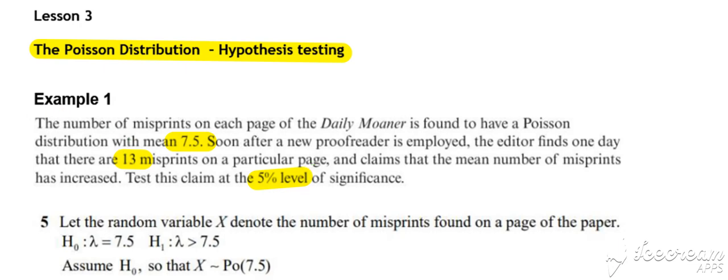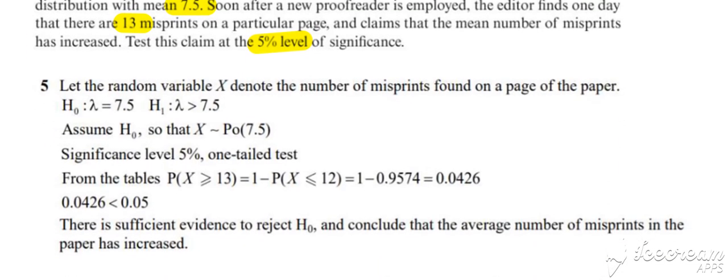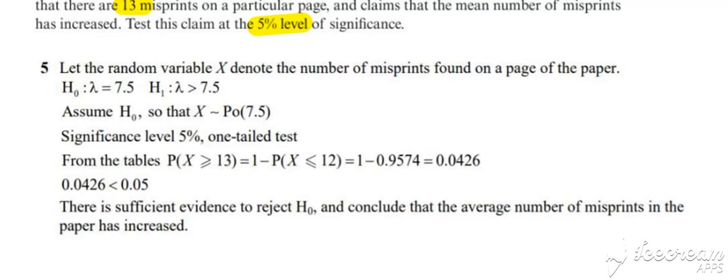So in this first example, we set up our null and alternative hypotheses. Make sure you use the right symbols. For a Poisson, null and alternative hypotheses are set up in terms of lambda. Check the time period as well; check you're working with the right time period for the question.